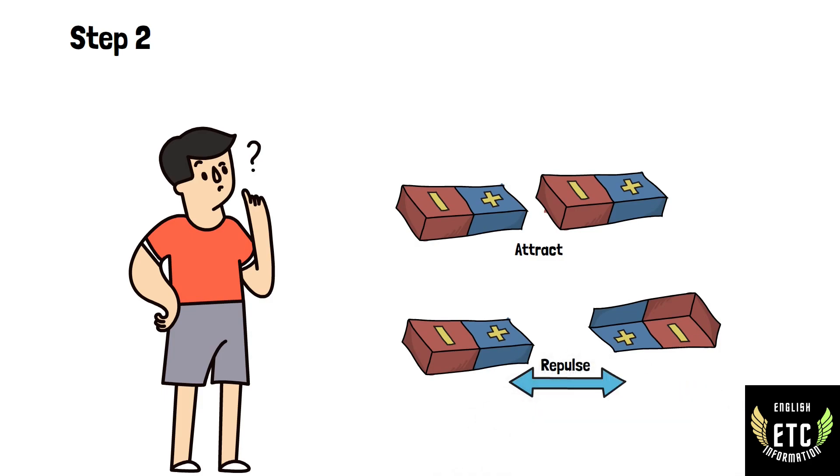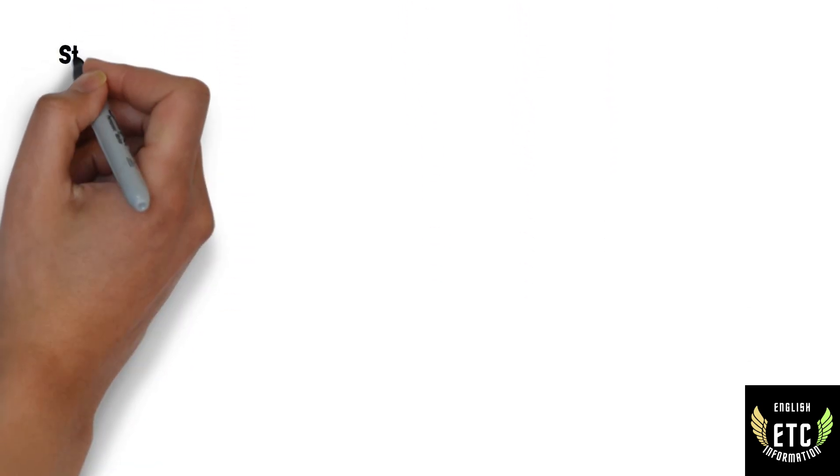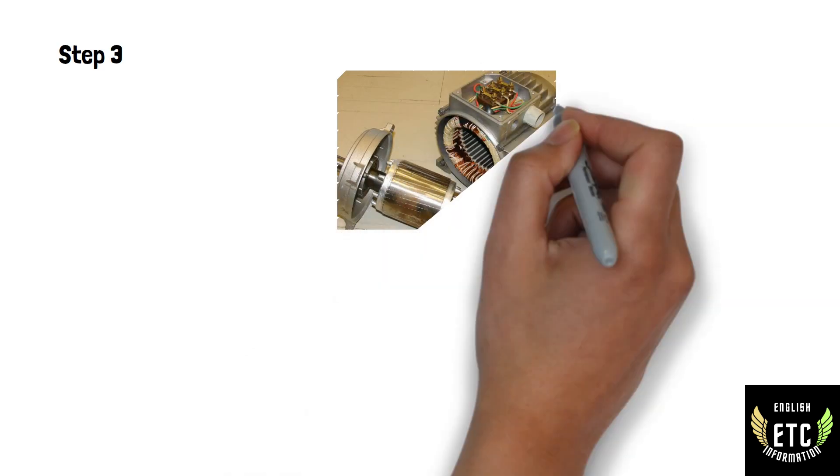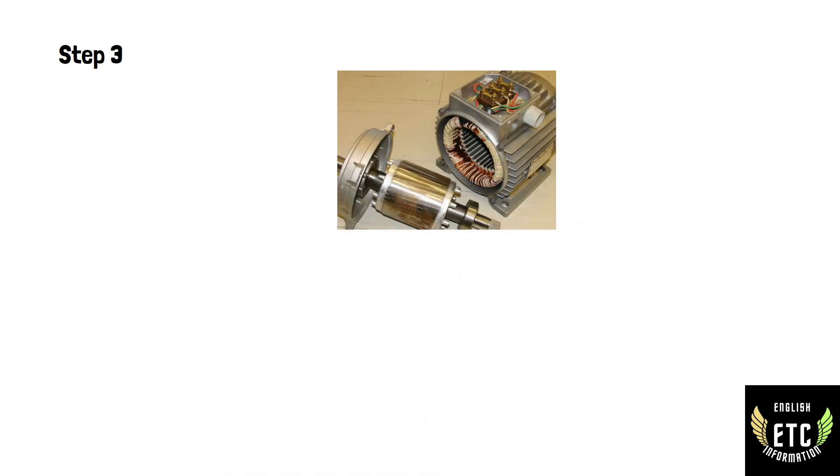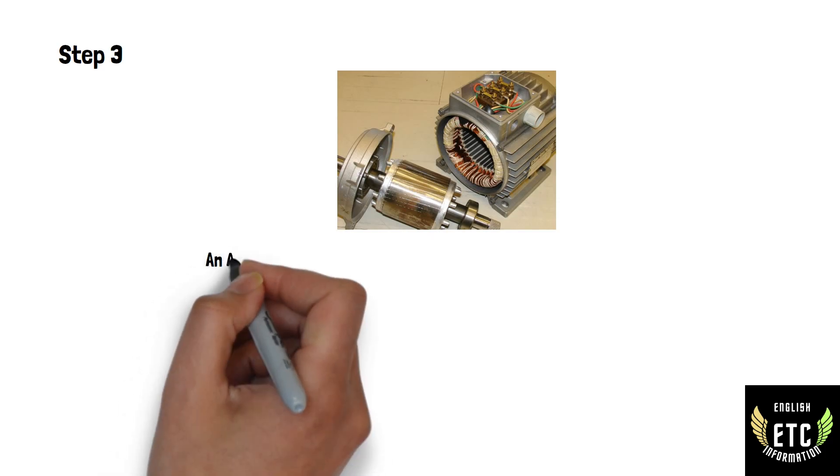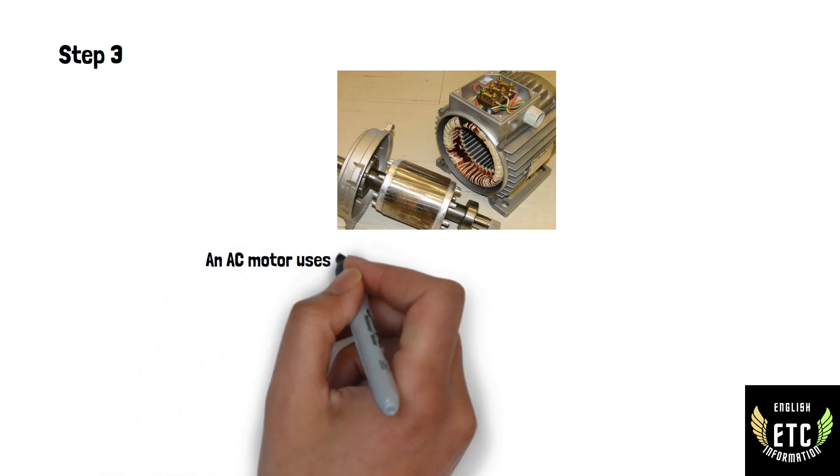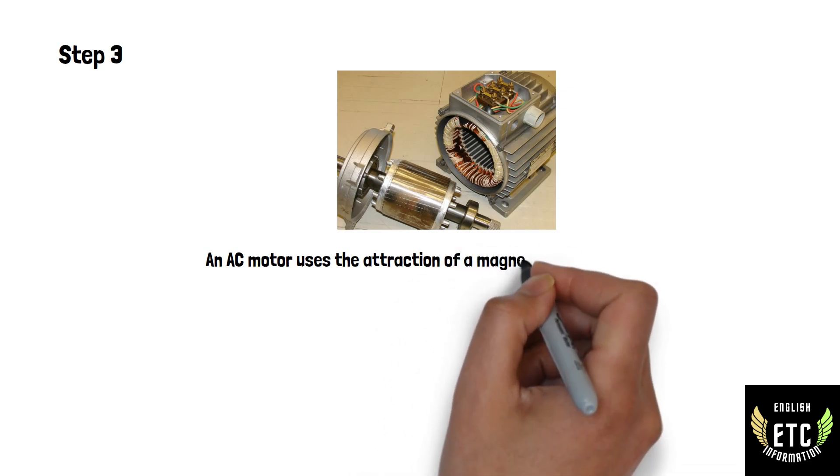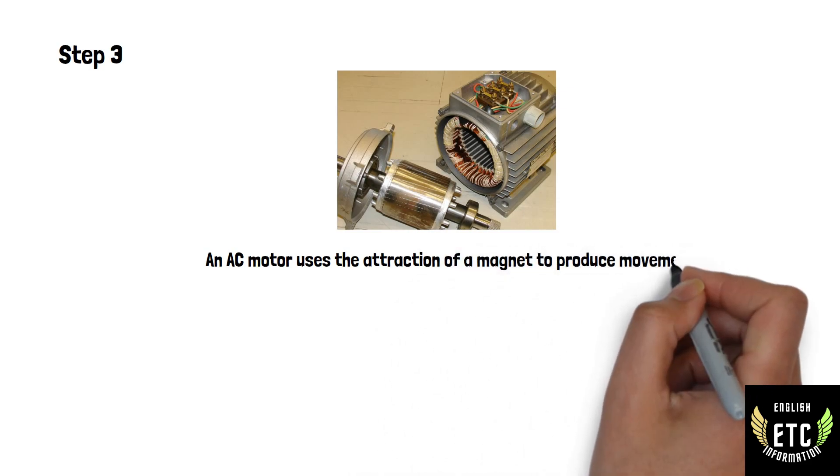In step three, an AC motor uses the attraction of magnets to produce movement. Inside the motor there are two sets of magnets. One that always stays in place, we call it the stator, and the other that can rotate, we call it the rotor. This we already have seen.